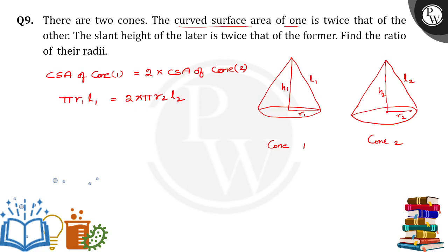Then next one, the slant height of the latter, that means the slant height of cone 2 is equal to twice that of the former, which means L2 is equal to two times of L1.